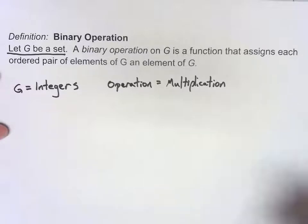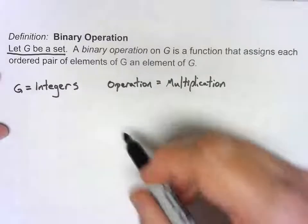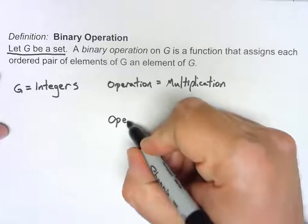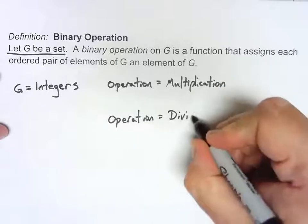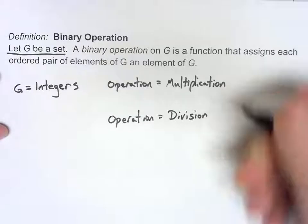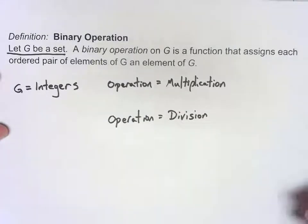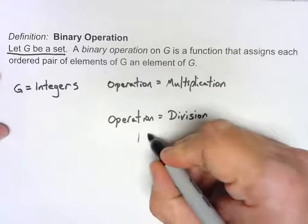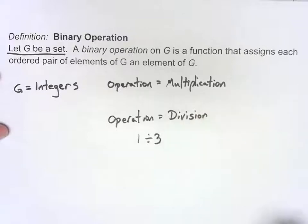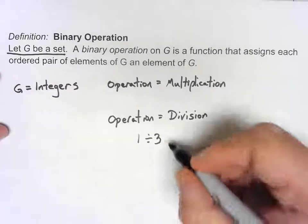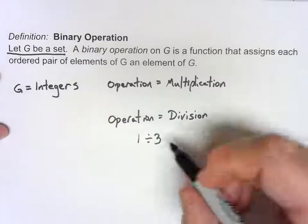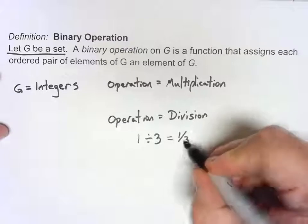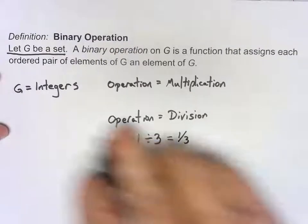Now on the other hand, if I take the integers and I think about my operation being division, that's not a binary operation. Because if I do something as simple as 1 divided by 3, I don't get an integer back out. Always if you put in two elements of your set, you've got to get out an element of your set. And one-third is not an element of the integers.